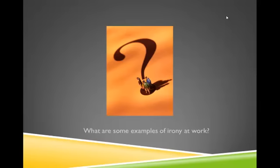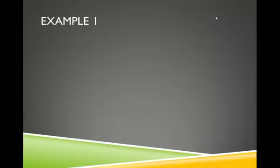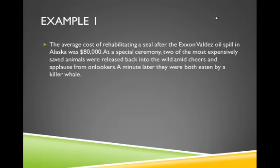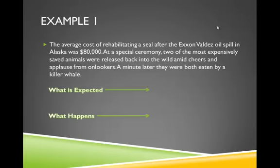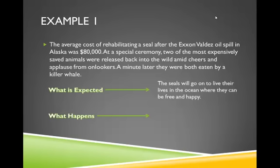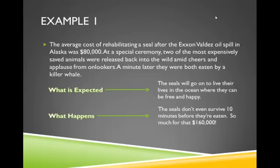The easiest way to understand irony is to look at some examples. Example one — take a moment to read. Okay, so what is expected and what actually happens? Well, we expect that these seals are going to go on to live their lives in the ocean, where they can be free and happy. We've just spent $80,000 per seal to rehabilitate them and release them into the wild, so we expect this is a good thing. What actually happens, however? They don't even survive 10 minutes before they're eaten, and there we just threw away $160,000. A discrepancy — a difference between what is expected and what happens.